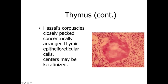Another identifying characteristic of the thymus is the thymic corpuscles, sometimes called Hassall's corpuscles. These are concentric areas of epithelial reticular cells that may become keratinized, forming a cluster or aggregate. We can see lots of small basophilic T lymphocytes surrounding these structures, and the epithelial reticular cells forming this keratinized cluster are a key identifying characteristic of the thymus.